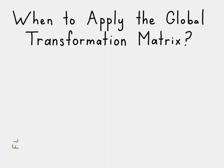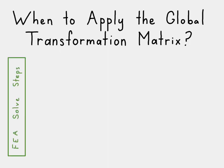Let's take a look at the six steps in the FAA solve process. The first step is the elemental stiffness matrices. At this point we don't need to apply it at all — it just depends on the elemental stiffness and element orientation, that's all.